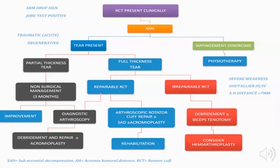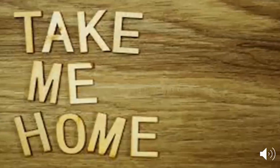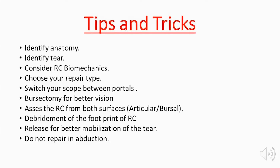The take-home messages are: identify the anatomy, identify the tear, consider the rotator cuff biomechanics, choose the appropriate repair type, and switch the scope between portals during rotator cuff repair. Perform a bursectomy for better vision, assess the rotator cuff from both articular and bursal surfaces, identify the footprint of the rotator cuff tear, perform a proper release for better mobilization of the tear, and do not repair the rotator cuff in abduction.